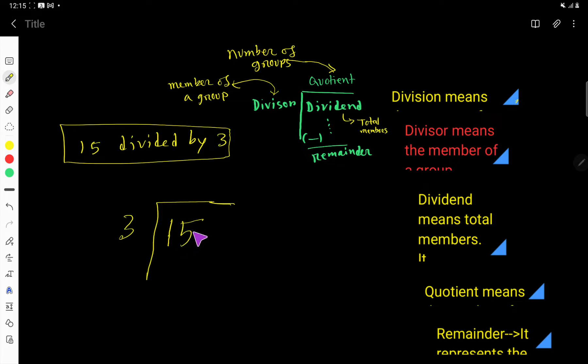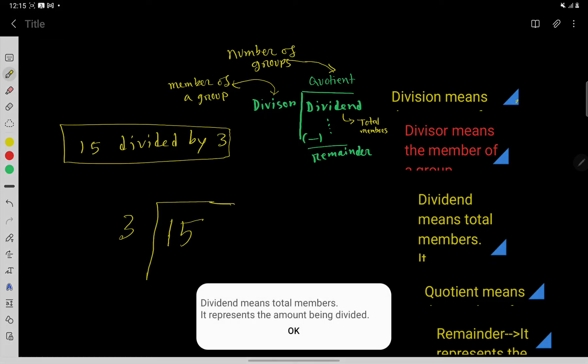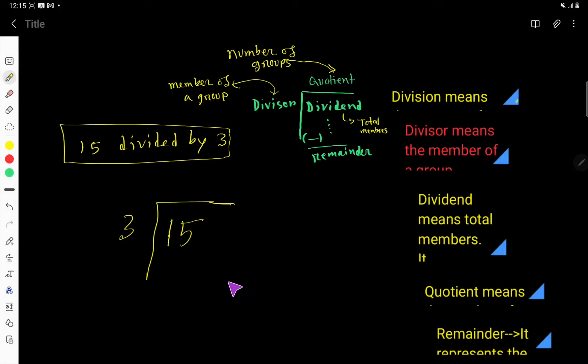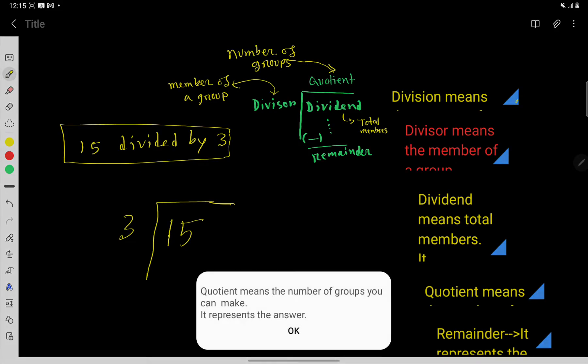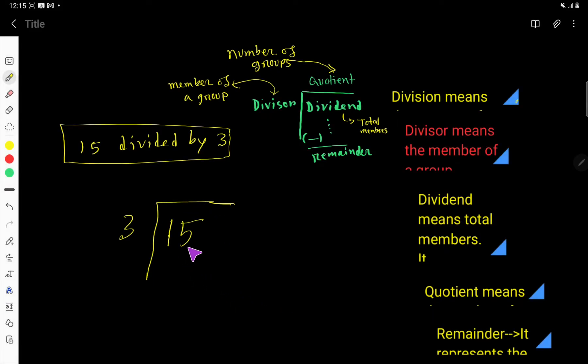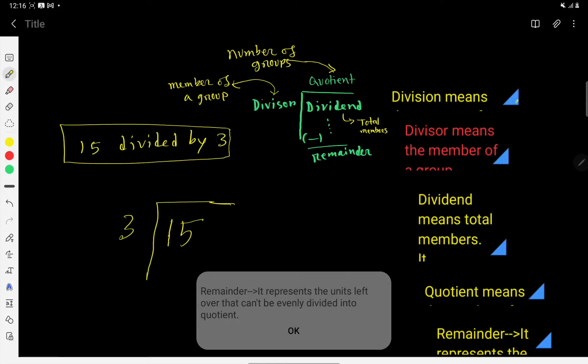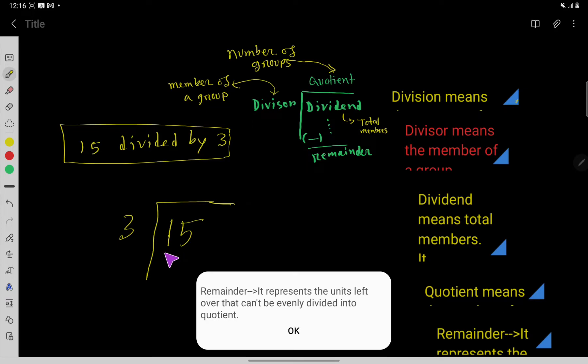This 15 is called dividend, that is total members. So what is dividend? Dividend means total members, it represents the amount being divided. So here we write quotient. What do you mean by quotient? Quotient means the number of groups you can make. That is, it represents the answer. And sometimes we write the remainder. Remainder means the units left over that can't be evenly divided into the quotient.